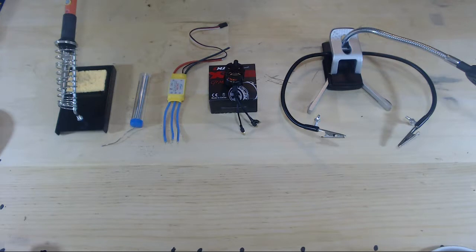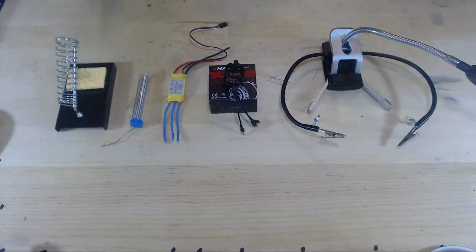So the things we will need: we will need a soldering iron stand, a damp sponge, not a wet sponge but a damp sponge, and a soldering iron at around 400 degrees Fahrenheit.